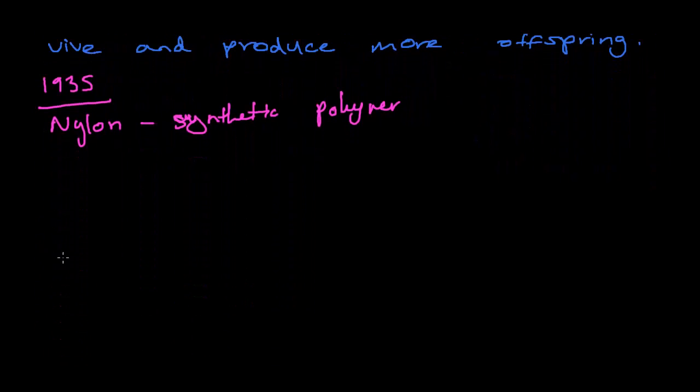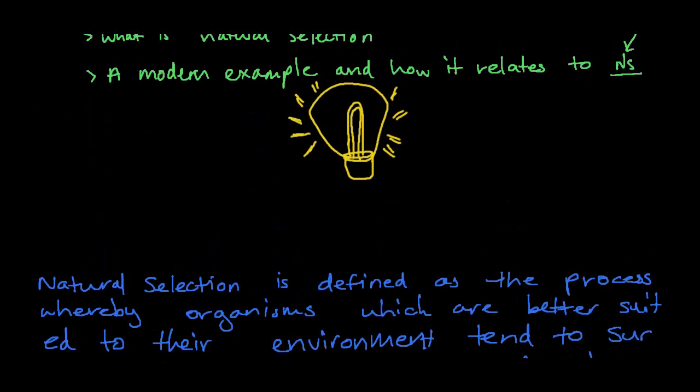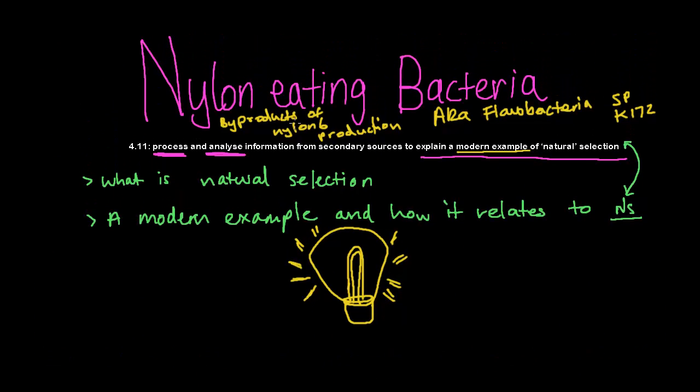What actually happened is that Japanese researchers in 1970s were able to find this strain of Flavobacteria, which was near a nylon-producing company, industrial area, and as I've said here, this bacteria actually eats the byproducts of nylon-6 production.